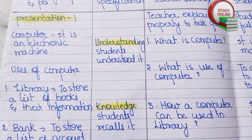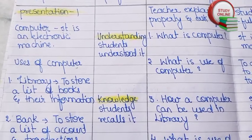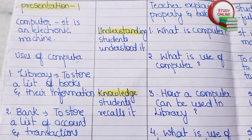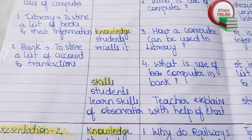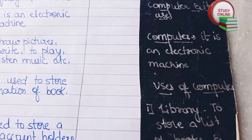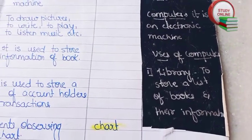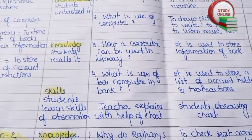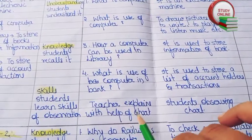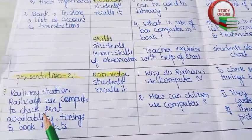In Presentation 1 we have to explain everything to students — the definition of a computer, uses of a computer, use in a library and a bank. The blackboard work includes the definition and uses of computer. The skills section shows the teacher explaining with the help of a chart and students observing the chart.